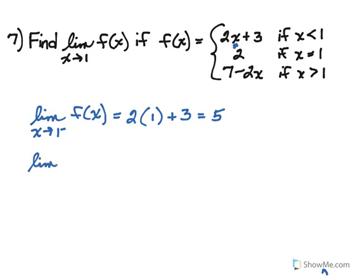Now we consider the limit as we approach one from the right. If we are approaching one from the right, that means we're approaching one through values larger than one — numbers such as 1.6, 1.5, 1.4, 1.3, 1.2, 1.1, finally landing at one. So which of these three pieces applies for those values larger than one? It's going to be the last piece, 7 minus 2x. We substitute 1 into that piece, and that gives us five as well.